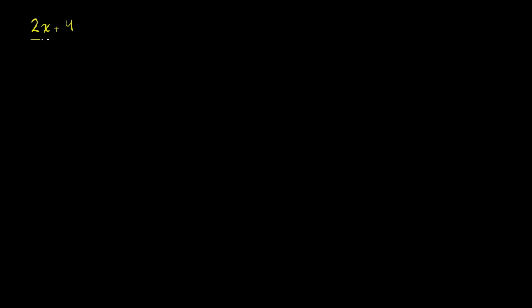So let's say I just want to divide 2x plus 4 and divide it by 2. We're not really changing the value, we're just changing how we're going to express the value. We already know how to simplify this — we could divide the numerator and the denominator by 2, and this would be equal to x plus 2. Or you could have factored a 2 out, and then those would have canceled out. But I'll also show you how to do it using algebraic long division, which is a bit of overkill for this problem. It's just a different way of doing things, but it's useful for more complicated problems.